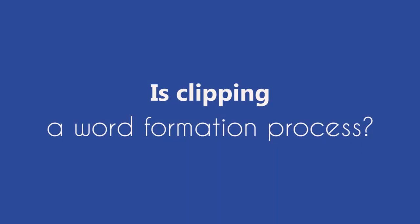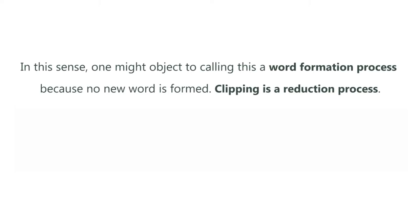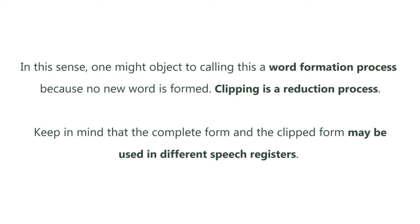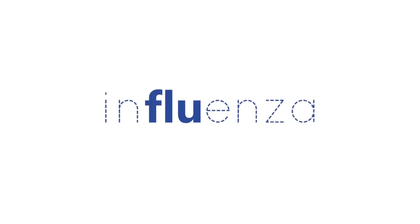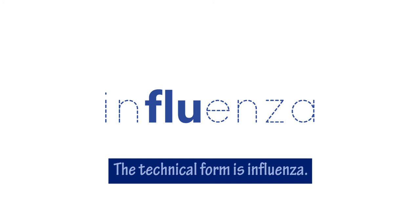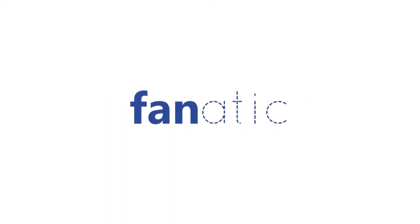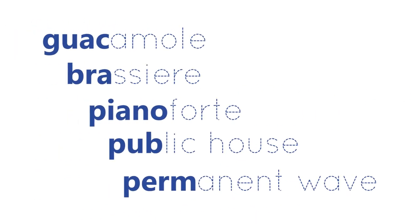The word 'perm' is short for 'permanent wave.' The word 'influenza' has been clipped to 'flu.' People usually say 'flu,' but if you want to use more technical language, you might say 'influenza.' Or 'telephone' has become 'phone.' For most of the time, people sometimes say 'fanatic,' but almost always say 'fan.' As you've seen in these examples, clipping is usually taking the beginning of the word and getting rid of the rest.